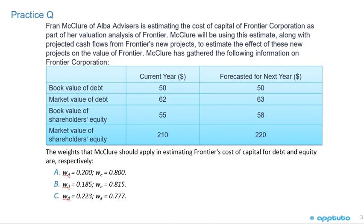We have the current year and the forecasted next year. The book value of debt: current year 50, next year 50. Market value of debt: current year 62, next year forecasted 63. Book value of shareholders' equity: current year 55, forecasted next year 58. Market value of shareholders' equity: current year 210, forecasted next year 220. The weights McClure should apply for debt and equity are respectively: A) debt 20%, equity 80%; B) debt 18.5%, equity 81.5%; or C) debt 22.3%, equity 77.7%.